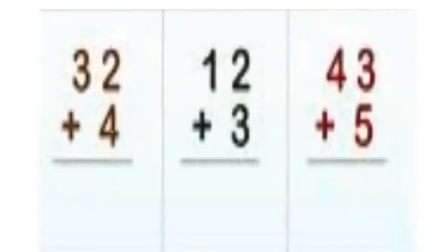Two plus four — count your two fingertips, then add four more: one, two, three, four. Count all together: after two — three, four, five, and six. The ten's place — three with no number present, so we write the same number. By adding four to number thirty-two, we get number thirty-six.